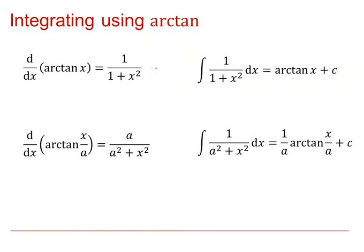That is the fairly standard result: the integral of 1 over 1 plus x squared is arctan x. Be careful with the general result — the integral of 1 over a squared plus x squared dx has a 1 over a in front of the arctan(x/a) term.